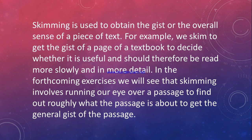For example, we skim to get the gist of a page of a textbook to decide whether it is useful and should therefore be read more slowly in more detail. When you do your research papers, you look through the book. You can see that certain parts are important and mark them with a highlighter.